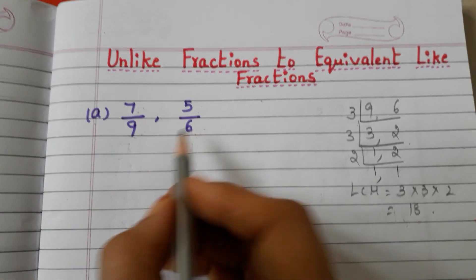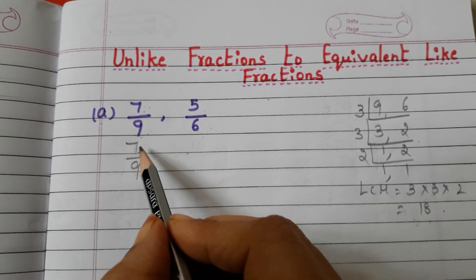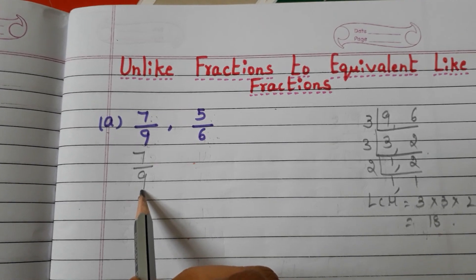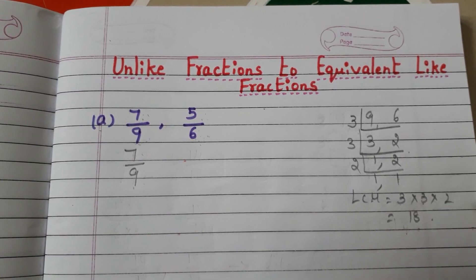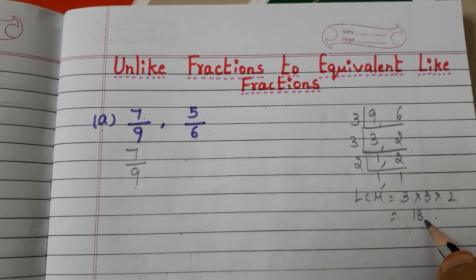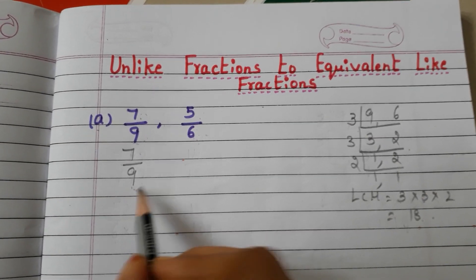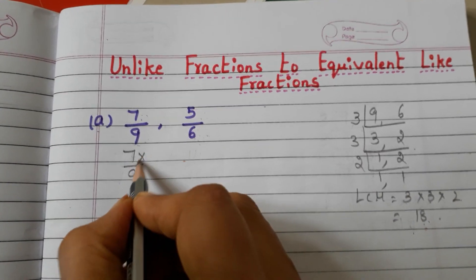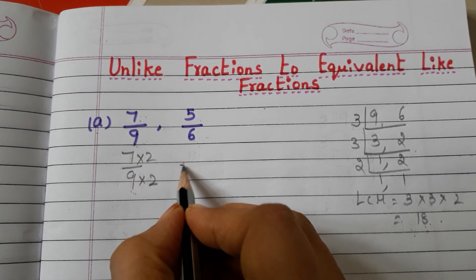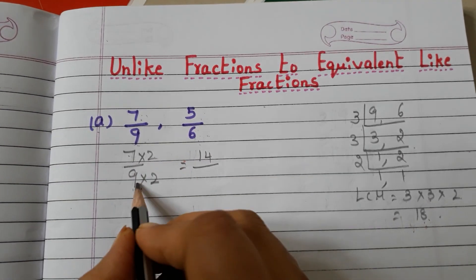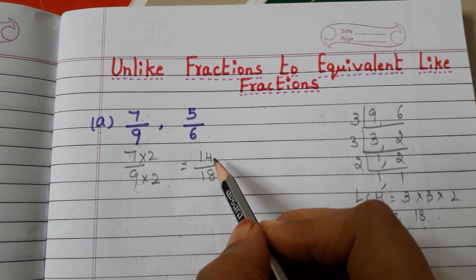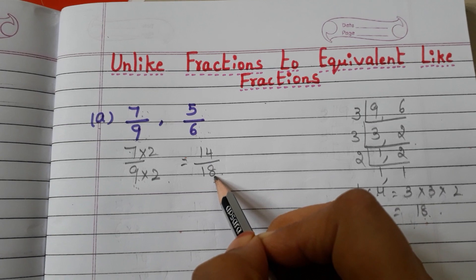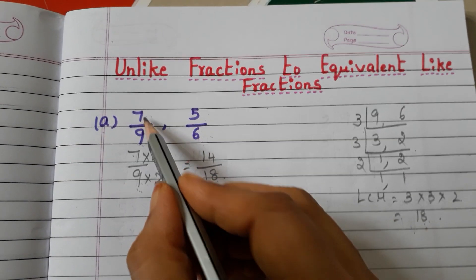Now take the fraction 7 by 9. We have to multiply the numerator and denominator with the same number so that the denominator becomes 18, because the LCM is 18. Here 9 is there and we have to get 18. With what number if we multiply 9 do we get 18? 2, right — because 9 twos are 18. So multiply the numerator and denominator with 2: 7 twos are 14 and 9 twos are 18. Now we get the new fraction 14 by 18, which is an equivalent fraction for 7 by 9.